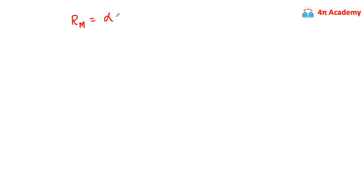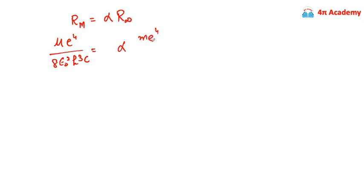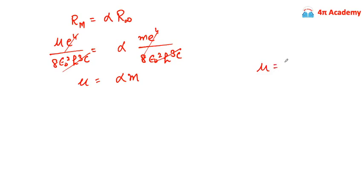For finite nuclei, the Rydberg constant changes with atomic mass, and we use the reduced mass mu = m·M / (m + M), where m is the electron mass and M is the nuclear mass. According to the question, the Rydberg constant for finite nuclear mass equals alpha times R-infinity. Substituting these values, we find that mu equals alpha times m.